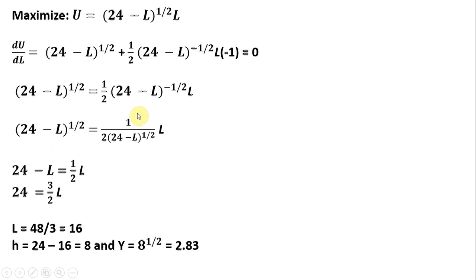And then following the rules of exponents, we can move this 24 minus L to the minus 1 half power down to the denominator. We can multiply through or cross-multiply these two terms here. This 24 minus L to the 1 half and 24 minus L to the 1 half just gives us 24 minus L.